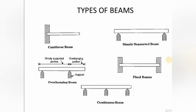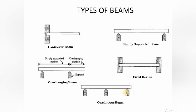Based on support conditions, beams are classified as follows: a cantilever beam has one free end and one fixed end; a simply supported beam has both ends simply supported; an overhanging beam is a simply supported beam with one end extended beyond the support; a fixed beam has both ends fixed (restrained in all directions); and a continuous beam has more than two supports, unlike a simply supported beam which has exactly two.